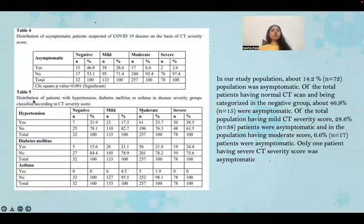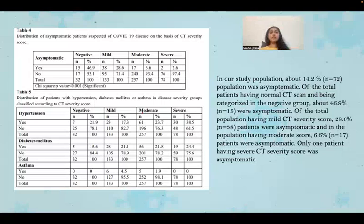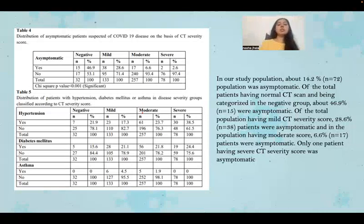Table five shows the distribution of patients with hypertension, diabetes mellitus, or asthma across disease severity groups classified according to CT severity score. Among severely diseased people, 38.5% had hypertension, 24.4% had diabetes mellitus, and none had asthma. The correlation of hypertension with disease severity was statistically significant.